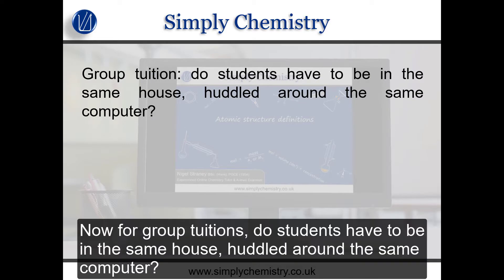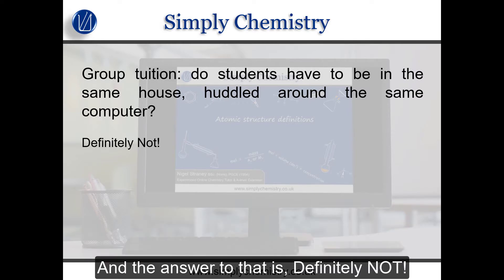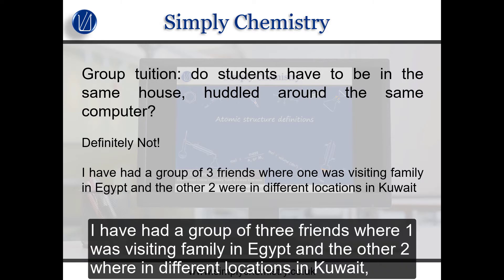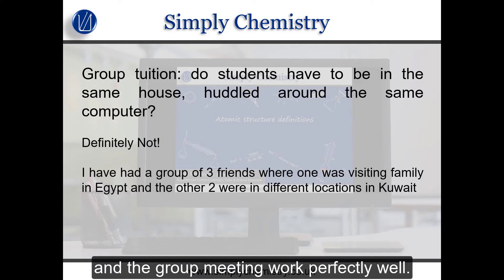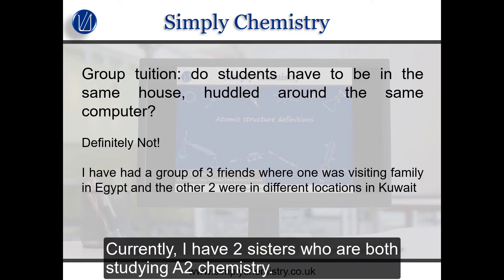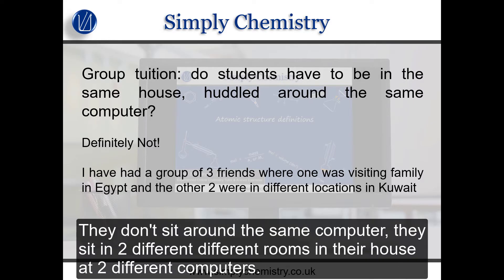For group tuitions, students do not have to be in the same house huddled around the same computer. I have had a group of three friends where one was visiting family in Egypt and the other two were in different locations in Kuwait, and the group meeting worked perfectly well. Currently I have two sisters both studying A2 chemistry — they sit in two different rooms in their house at two different computers.